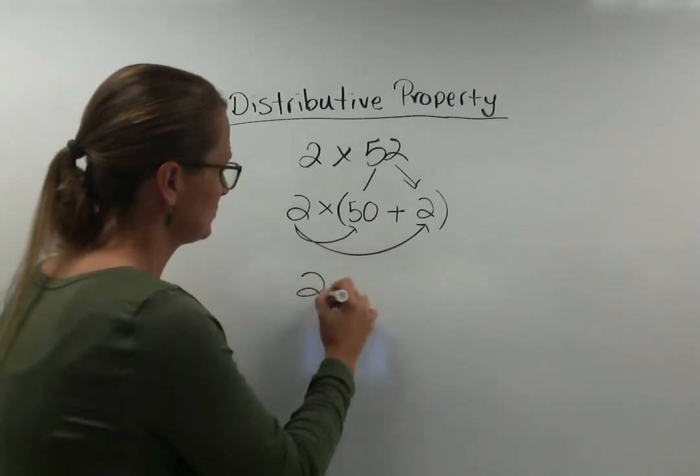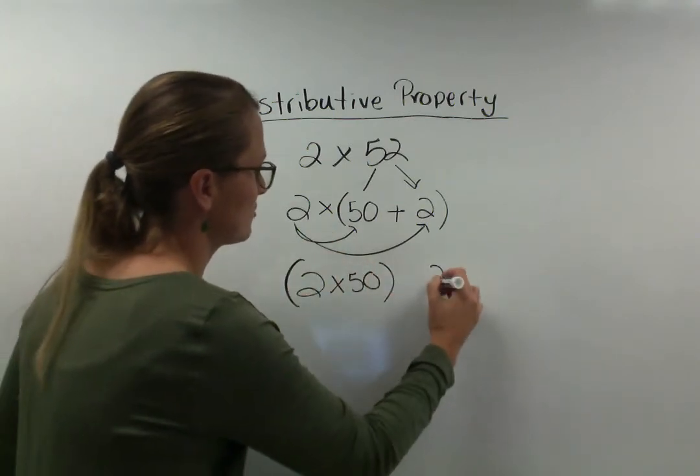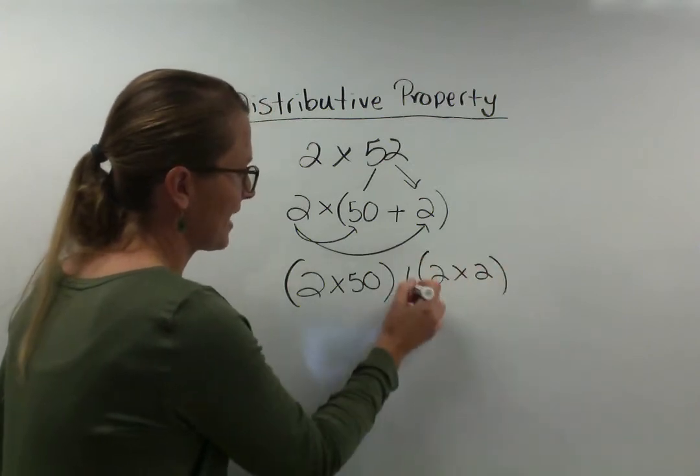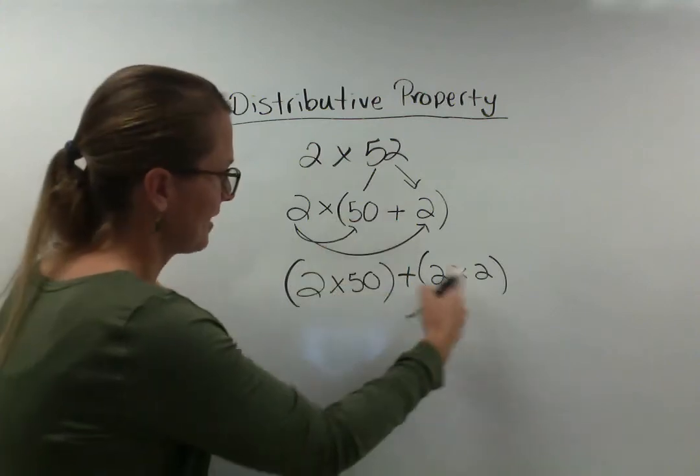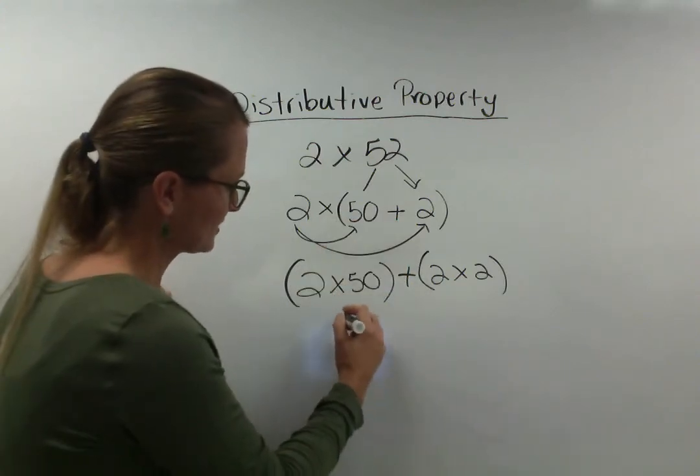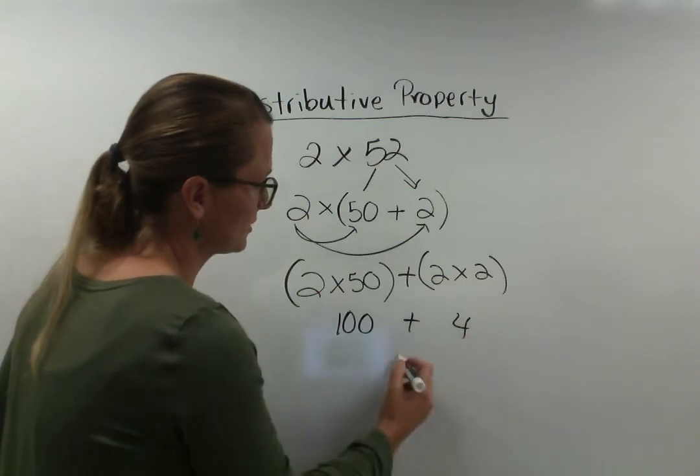So I did 2 times 50 and then I did 2 times 2 and I added them back together because I broke it apart. I added them back together once I found the answer. So 2 times 50 was 100 and 2 times 2 was 4. So the answer is 104.